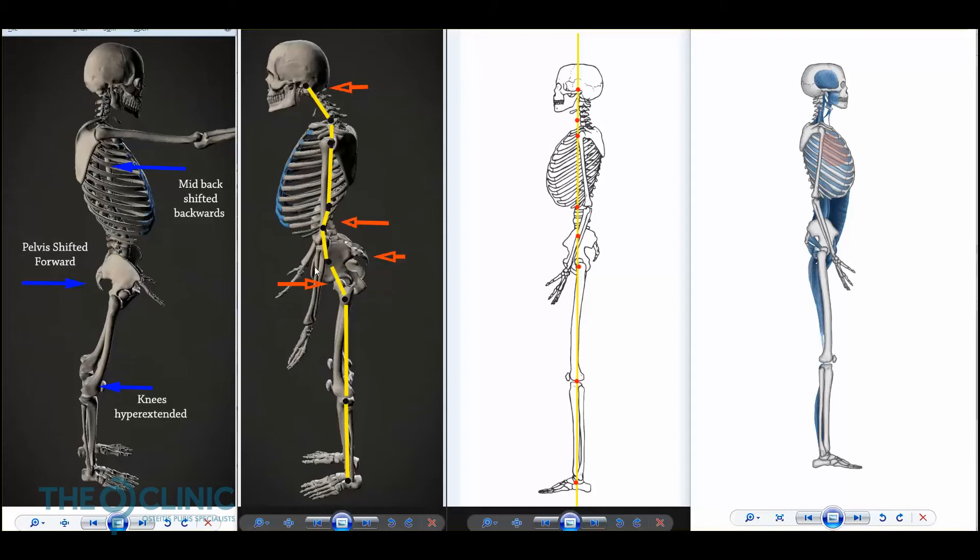Because your core is not engaging, your hip starts to drop, your pelvis drops, so you're overloading the front of your pelvis. And obviously these OP mechanics then lead to you developing osteitis pubis.